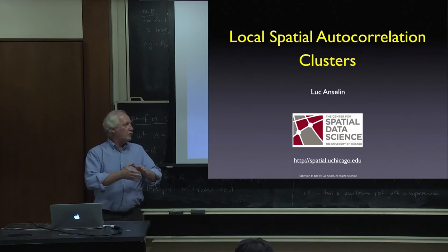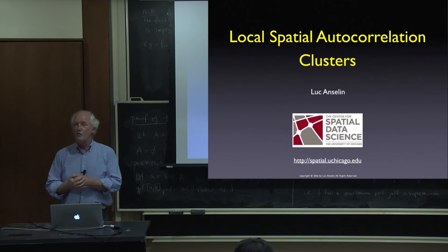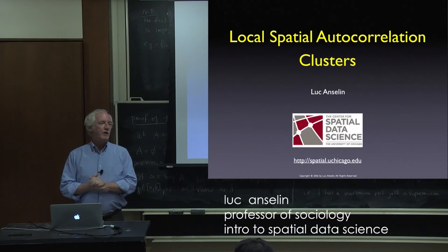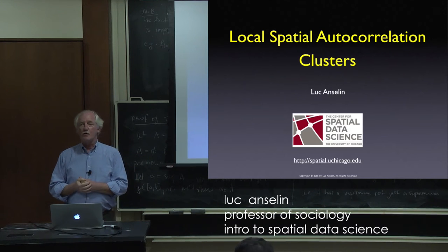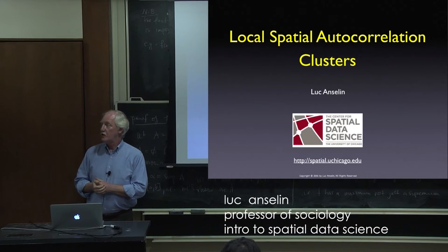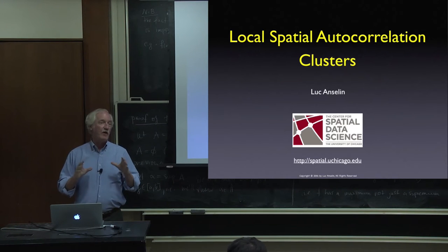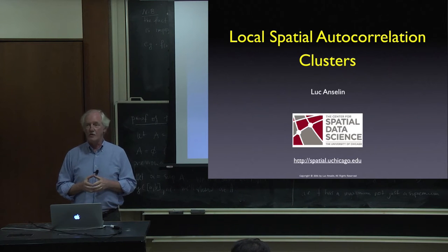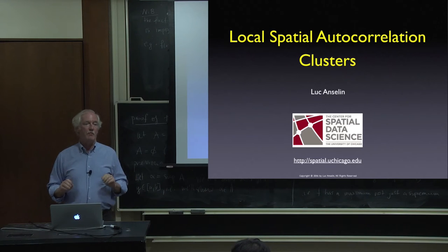We're starting a new module, moving from global spatial autocorrelation — the characterization of the full pattern — to the actual identification of clusters, the identification of special areas that are somehow different from the other areas. Today, we'll take a statistical approach.